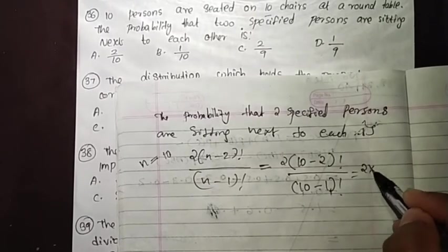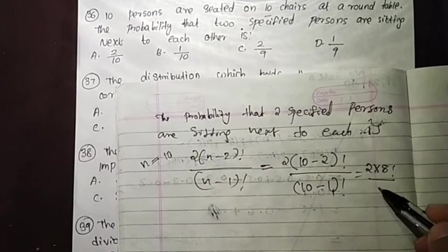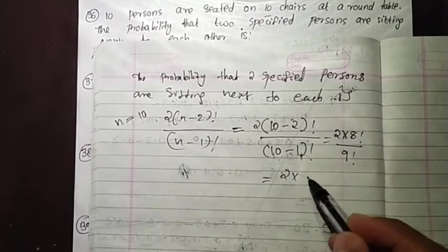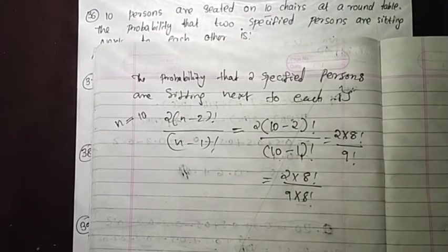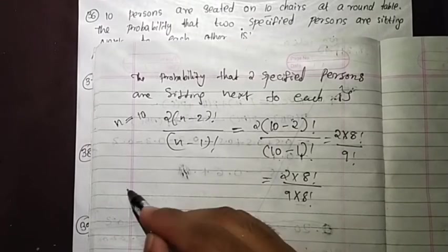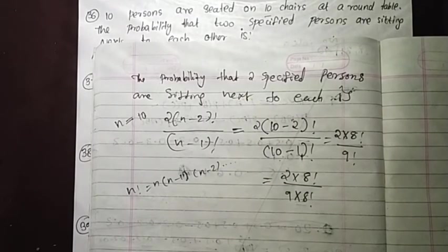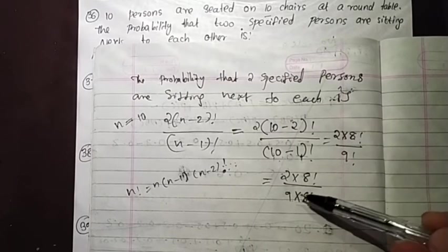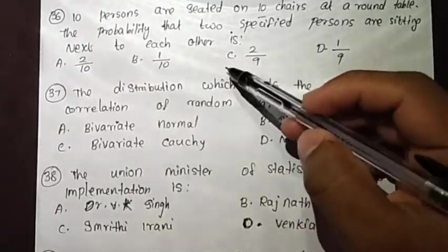The probability is 2 into (10 minus 2) factorial divided by (10 minus 1) factorial, which is 2 into 8 factorial divided by 9 factorial. Since 9 factorial equals 9 into 8 factorial, this simplifies to 2 by 9. So the answer is 2/9, Option C.